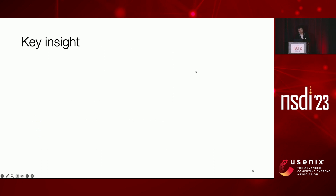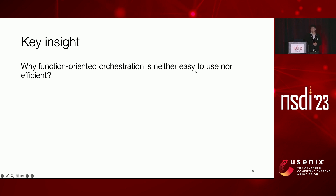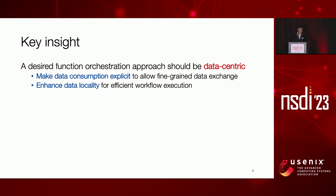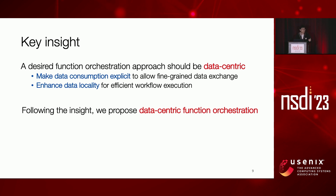To achieve this goal, we ask: why does existing function-oriented orchestration fall behind? It is neither easy to use nor efficient. Our answer is that it is agnostic to intermediate data. First, the function orchestration is unaware of how and when intermediate data are consumed in the workflow, so developers have no way to specify fine-grained data sharing patterns. Second, it is unaware of data locality and is not designed for fast data sharing. Therefore, our key insight is that a well-designed function orchestration should be data-centric — making data consumption explicit and enhancing data locality to enable efficient workflow execution.